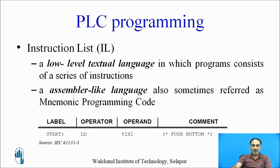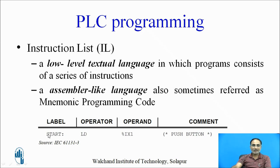Instruction List is a low-level textual language in which programs are written as a series of instructions. As shown in the example, each instruction contains a label, then an operator, operand, and comment. It is very similar to assembly language programming and is sometimes referred to as mnemonic programming code.